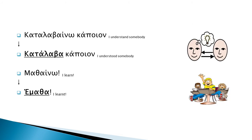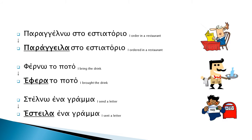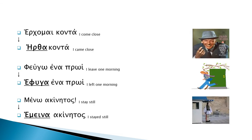Καταλαβαίνω κάποιον → Κατάλαβα κάποιον. Μαθαίνω → Έμαθα. Παραγγέλνω στο εστιατόριο → Παράγγειλα στο εστιατόριο. Φέρνω το ποτό → Έφερα το ποτό. Στέλνω ένα γράμμα → Έστειλα ένα γράμμα. Έρχομαι → Ήρθα. Φεύγω → Έφυγα. Μένω ακίνητος → Έμεινα ακίνητος.